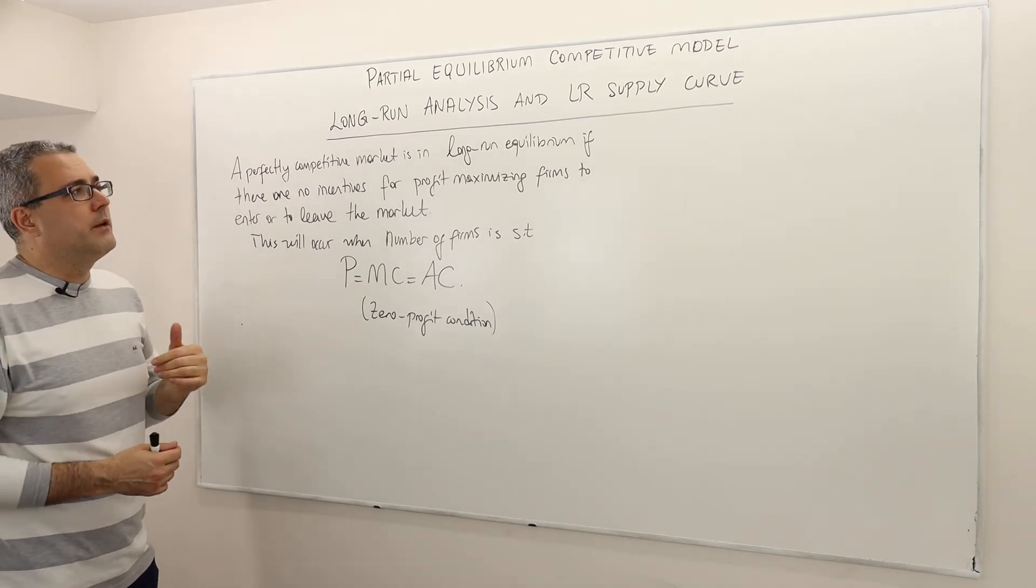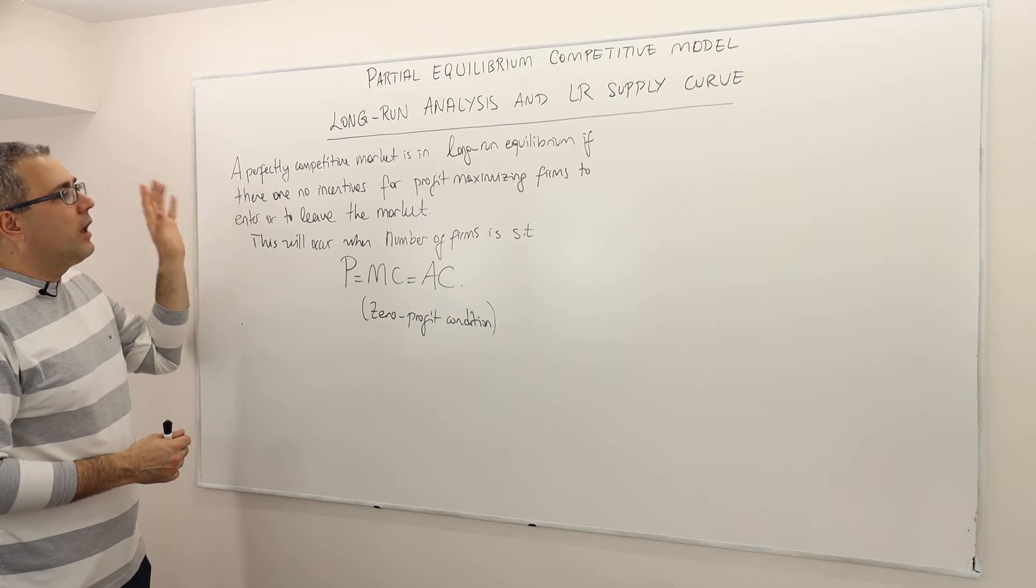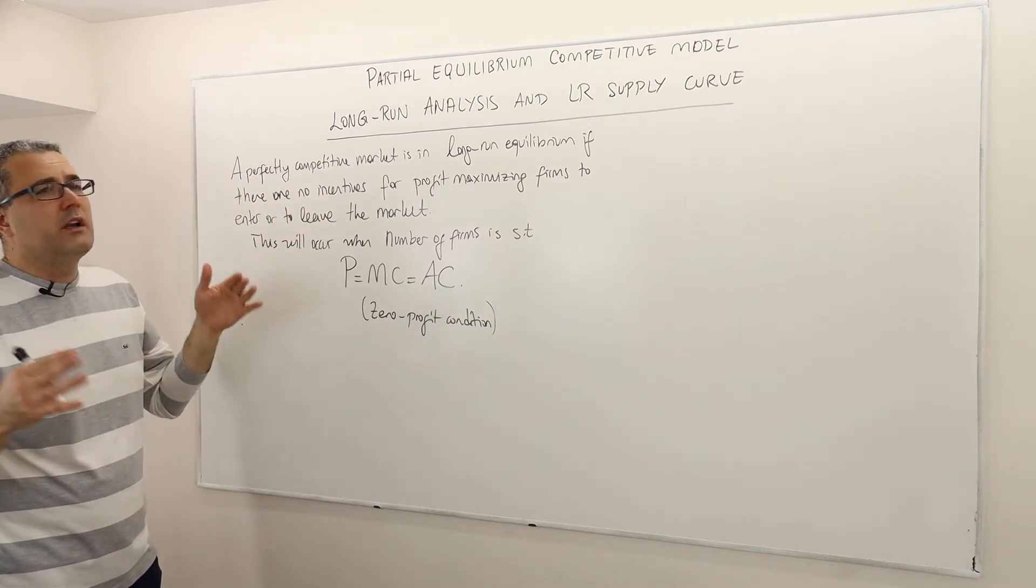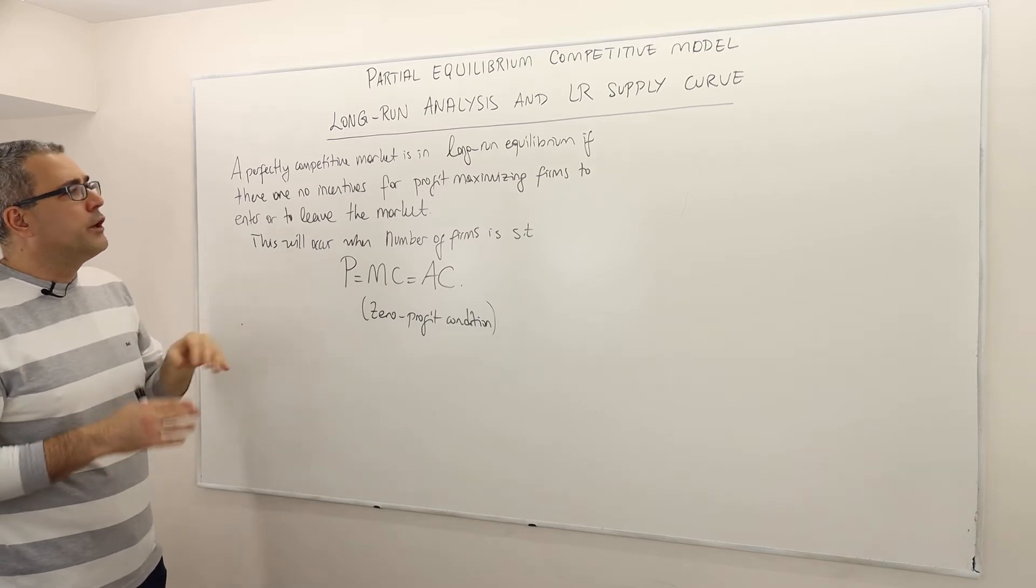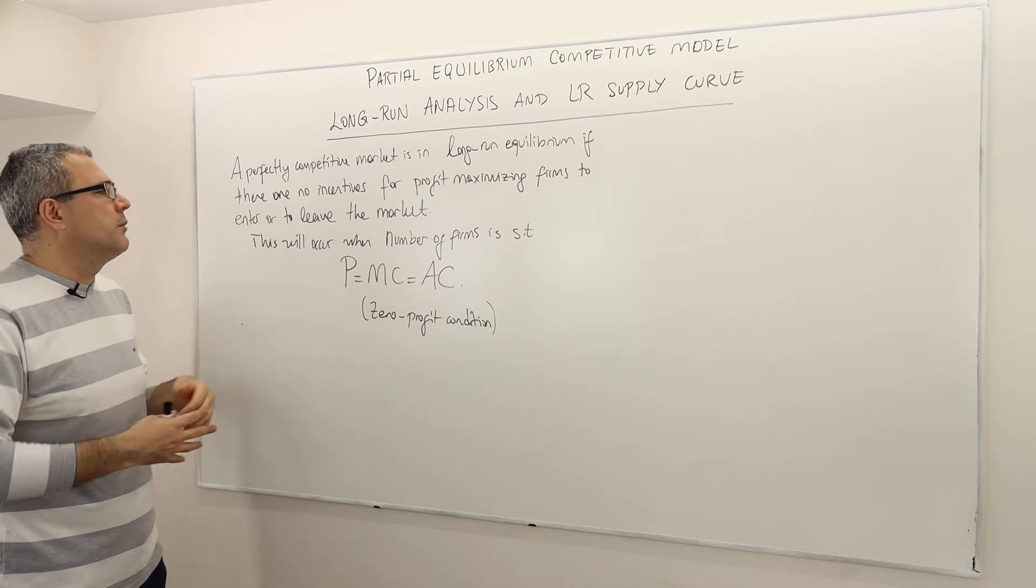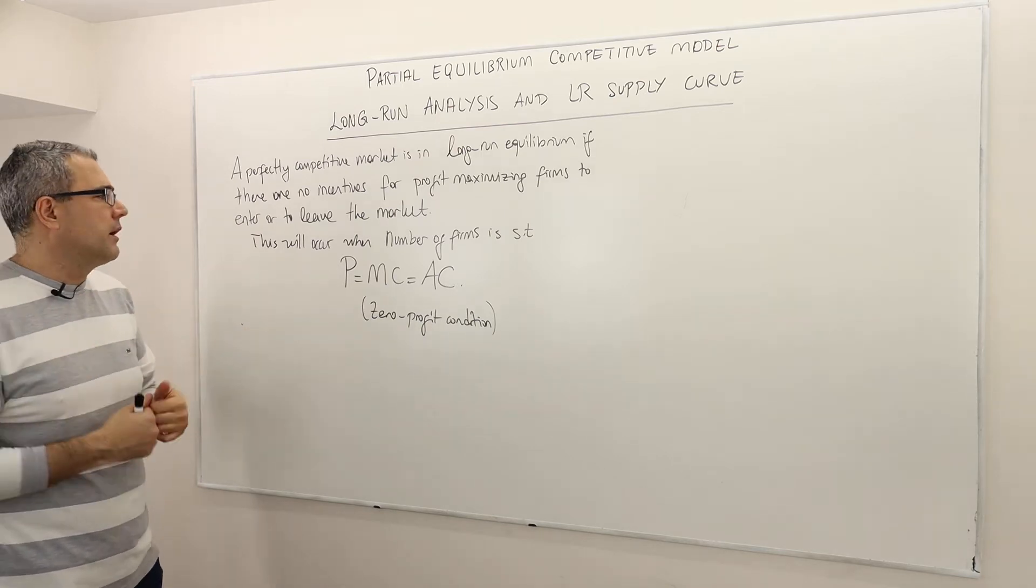First, what do we mean by long-run in a perfectly competitive market? Here's the definition. A perfectly competitive market is in a long-run equilibrium if there are no incentives for profit-maximizing firms to enter this market or to leave the market.